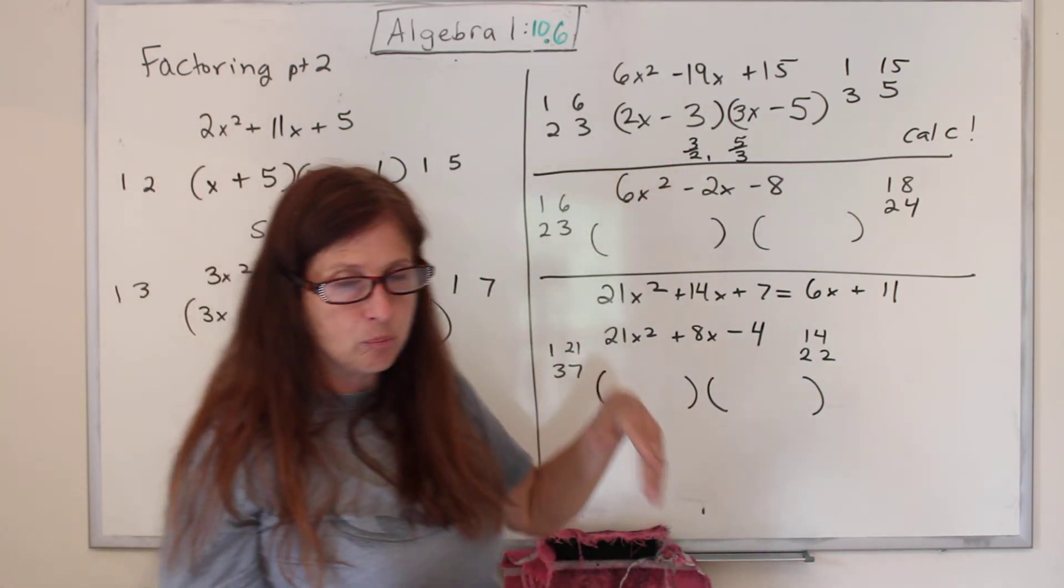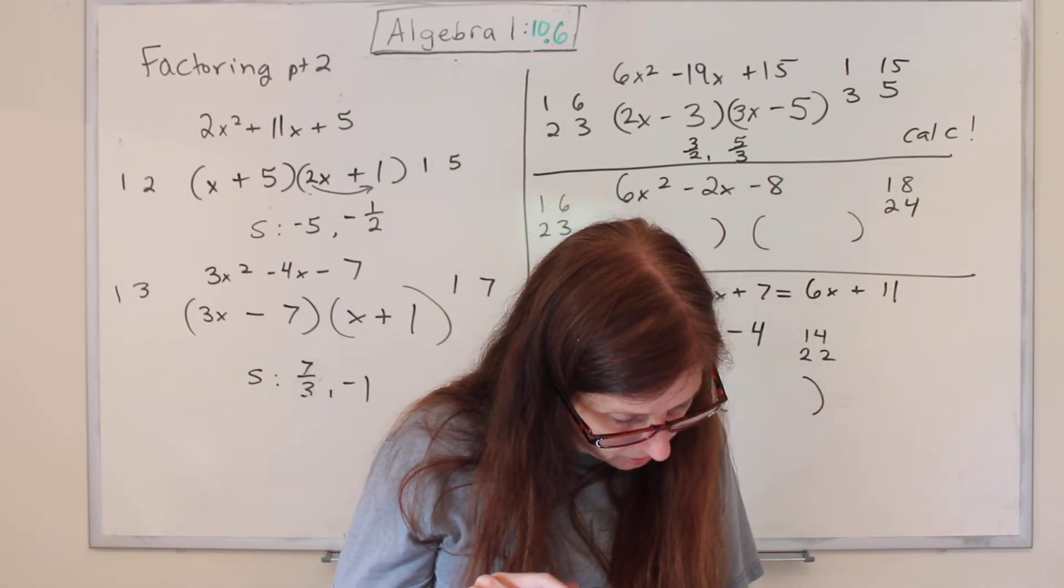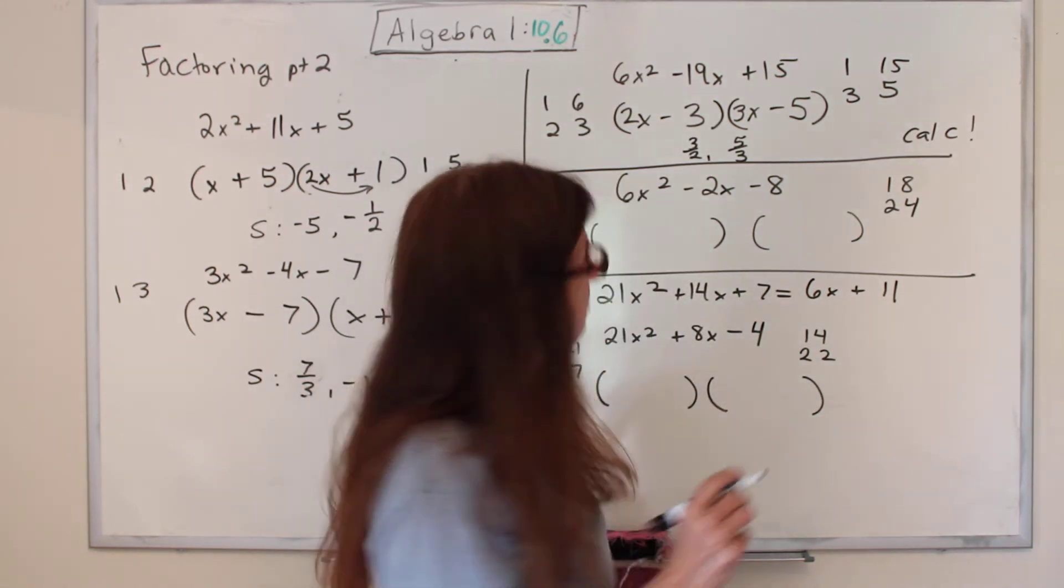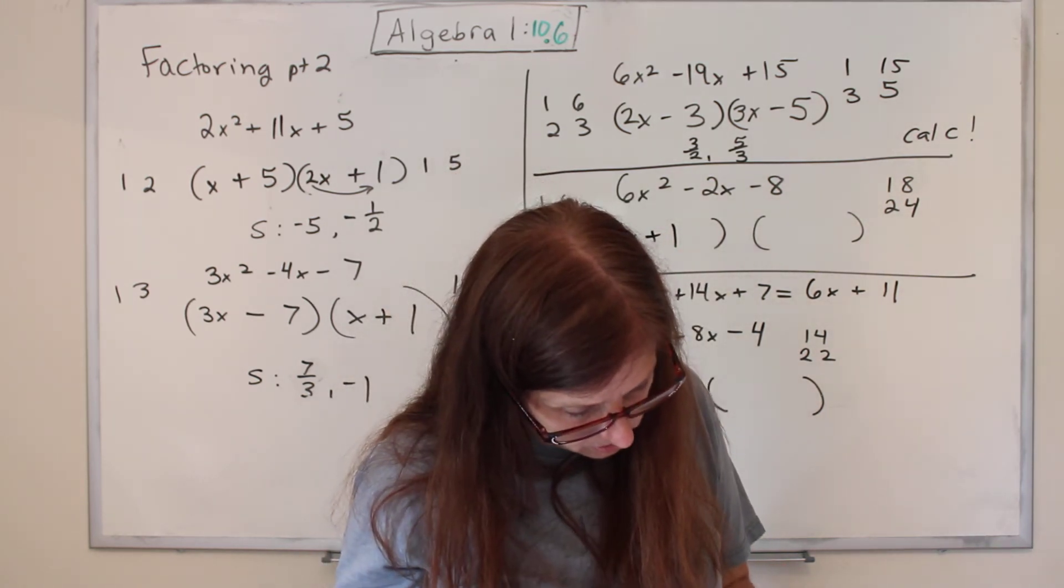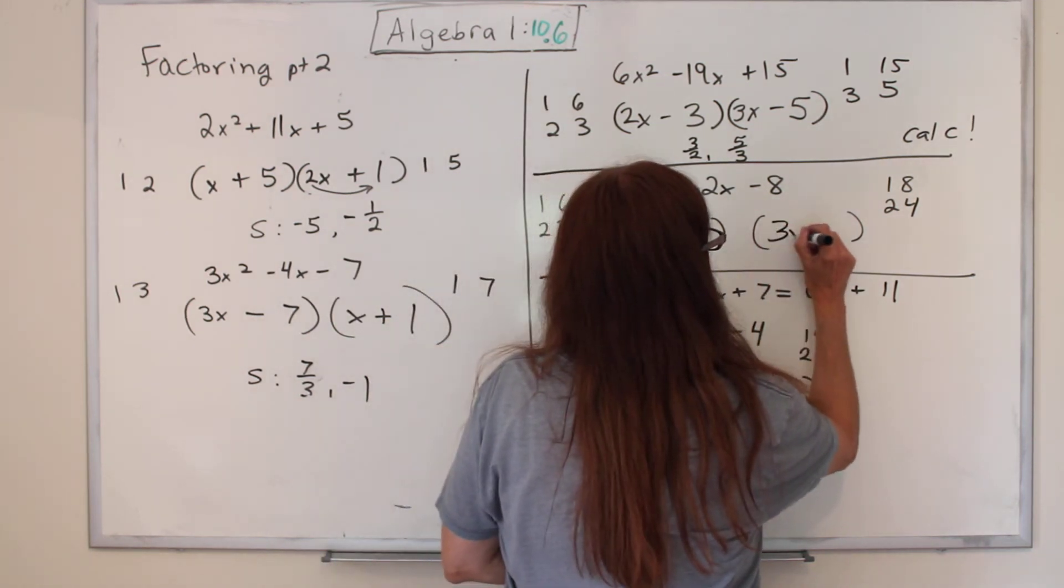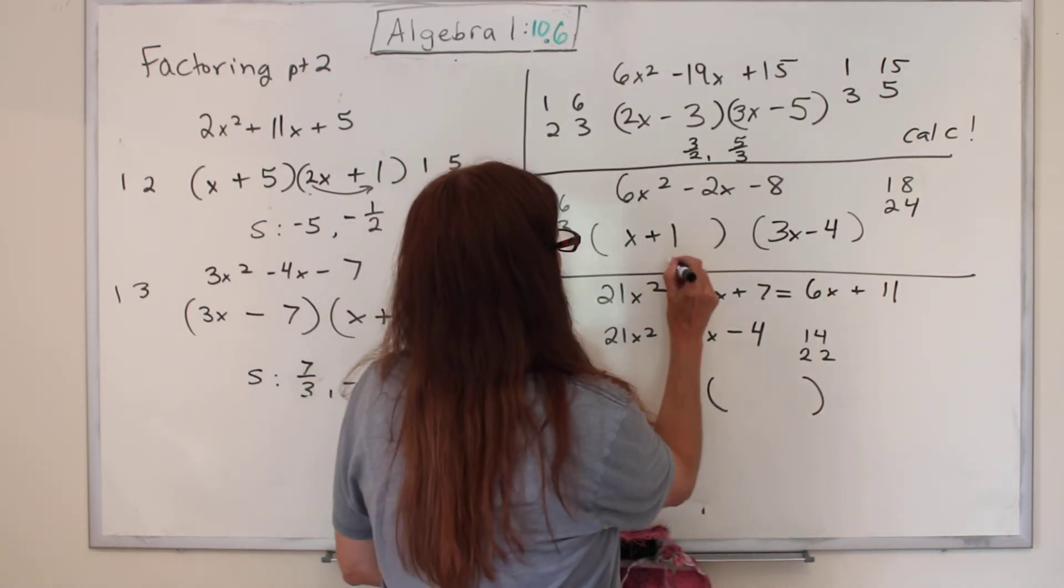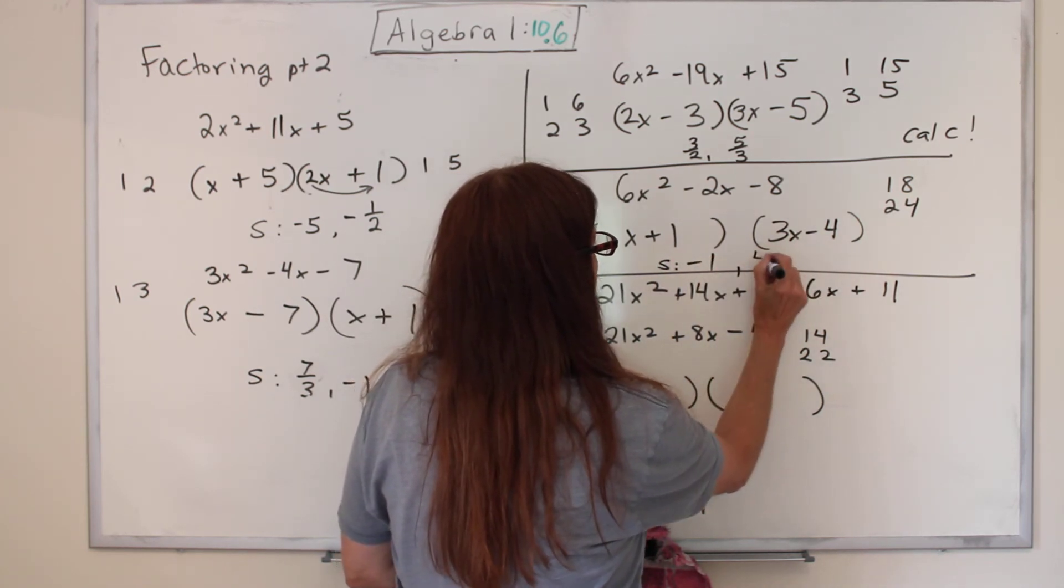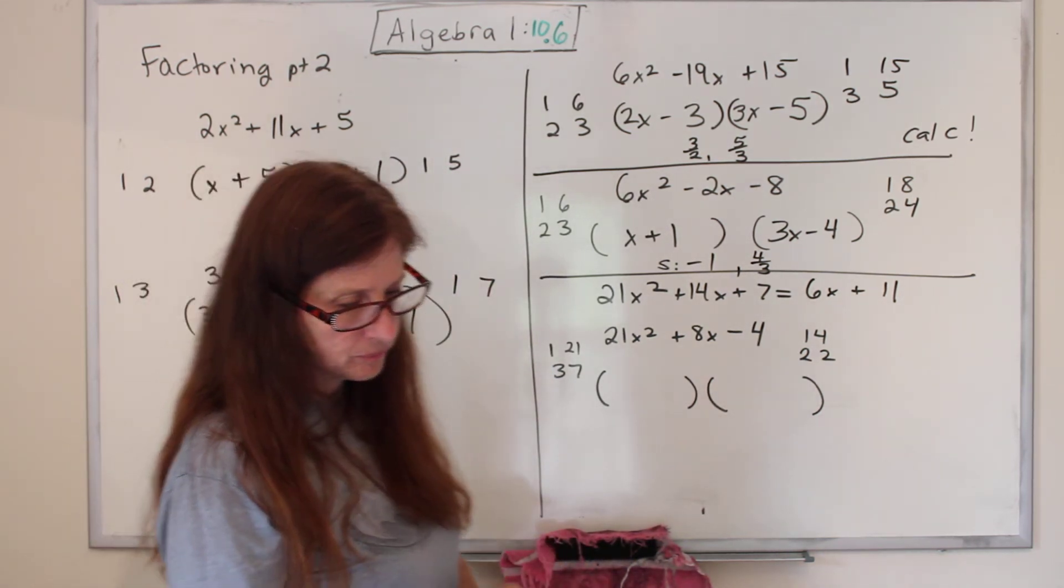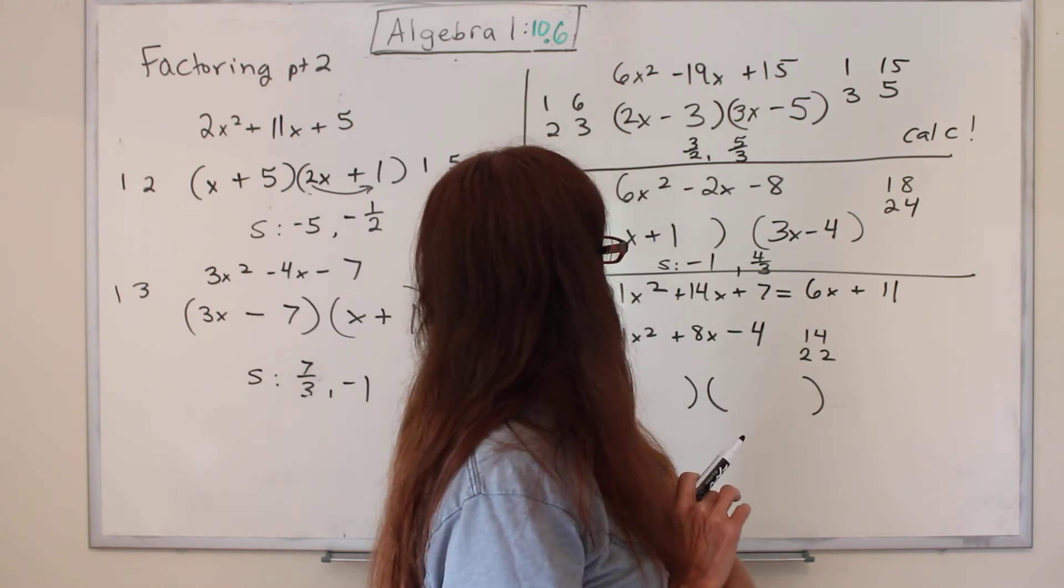Same thing with this one. It's complicated. We're not wasting the time to do it the old-fashioned way. So with this one, it was x plus 1 and 3x minus 4. So the solutions here are negative 1 and positive 4 thirds. So we could get the answer that way. And it says yes, and that is it.